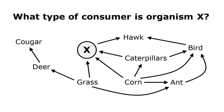Here's another practice question in the same format, once again asking what type of consumer is organism X. To determine that, I just need to see what this organism is consuming. I can see that organism X is consuming grass, corn, and caterpillars. So because organism X is consuming both plants and other animals, whatever X is, it must be an omnivore.